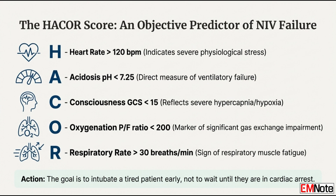The HACOR score: H is for heart rate — a rate over 120 beats per minute is a bad sign. A is for acidosis — a pH less than 7.25, meaning critical respiratory failure, usually muscle exhaustion. C is for consciousness — a Glasgow Coma Scale score less than 15, since changing mental status is an immediate alarm bell. O is for oxygenation — a PF ratio less than 200, meaning if they're still that hypoxic on NIV they're at high risk. R is for respiratory rate over 30 breaths per minute, showing persistent unsustainable work of breathing.